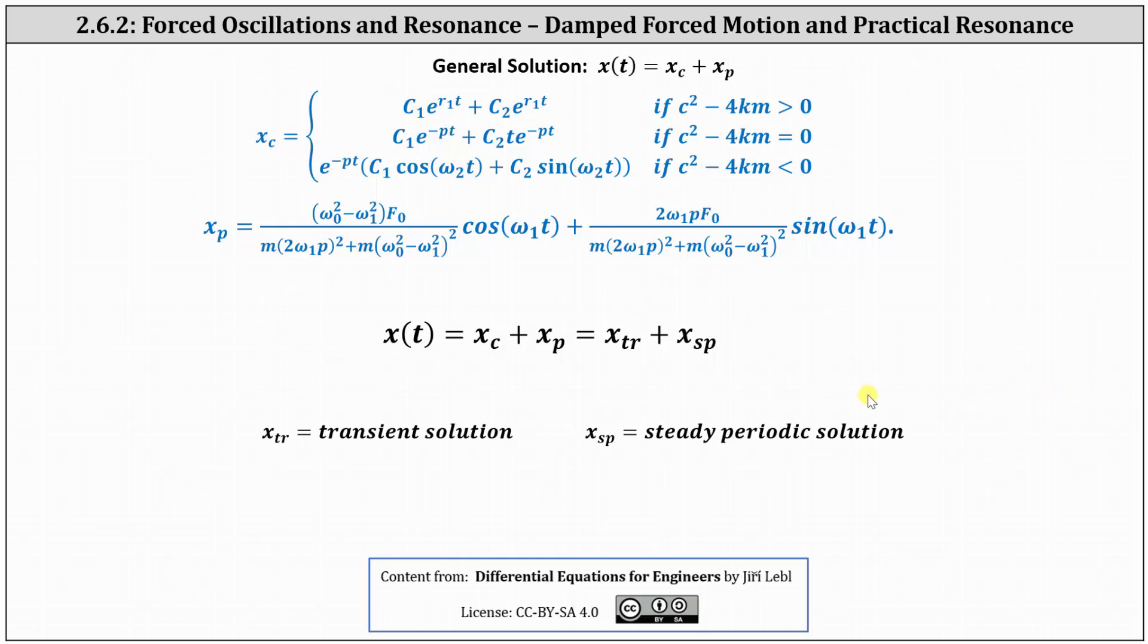In the previous lesson we justified the formula for the general solution for damped forced motion shown here in blue. When we have damped forced motion, the complementary solution x_c is called the transient solution and is identified by x_tr, and the particular solution x_p is called the steady periodic solution identified by x_sp.